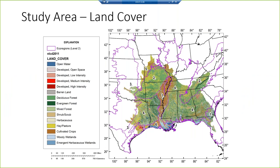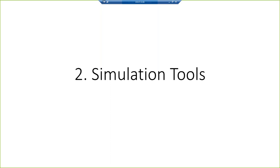Looking at land cover across the study area, the purple lines represent the level 2 ecoregions, which generally line up with physiographic provinces. The Mississippi alluvial plain is predominantly cultivated crops; large urban areas of Atlanta and Houston show up in red. A lot of the basins are still forested — there has been much land cover change historically, from heavy cultivation at the turn of the century to second-growth forests, and now we're moving toward urbanization, suburban development, and increased agriculture.